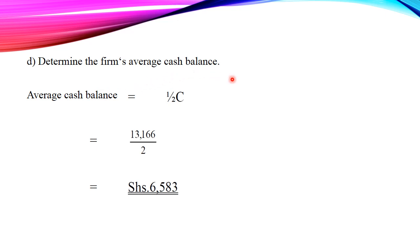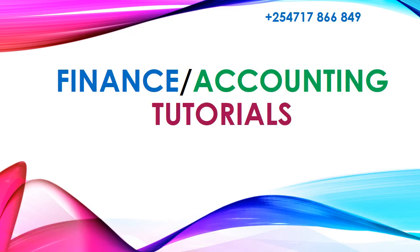Lastly, Part D asks for the firm's average cash balance. To get this, we divide the optimal cash balance by two — that is, 13,166 divided by 2 — which gives 6,583. That is how you determine the optimal cash balance in an organization using the Baumol model.